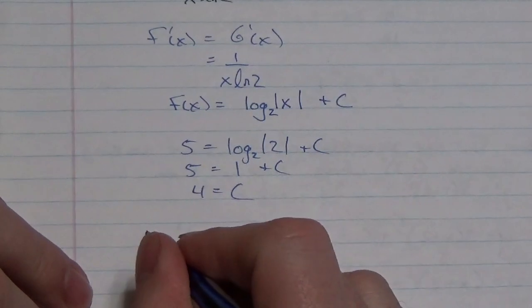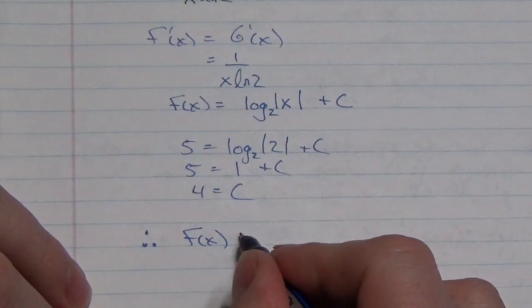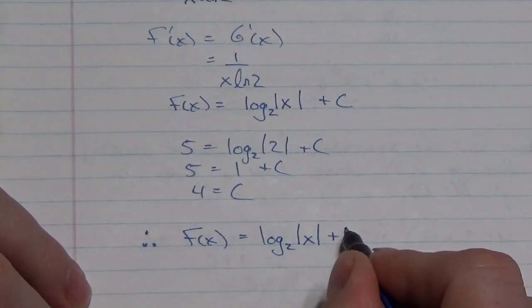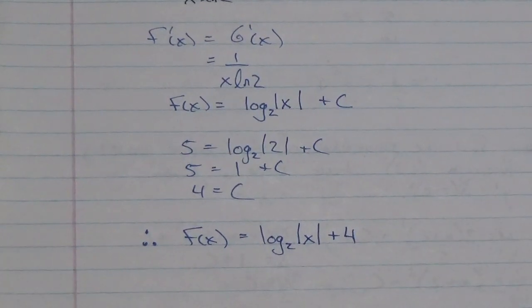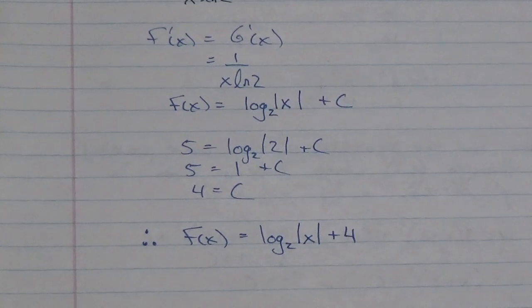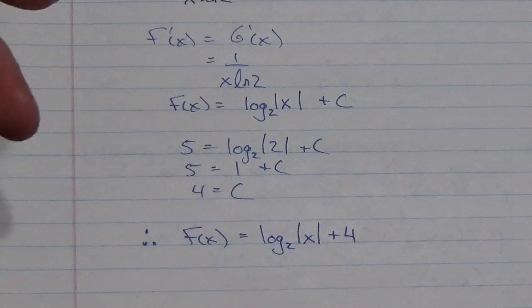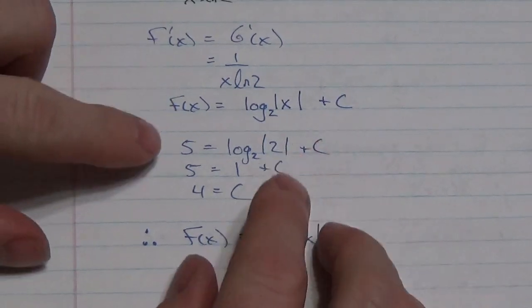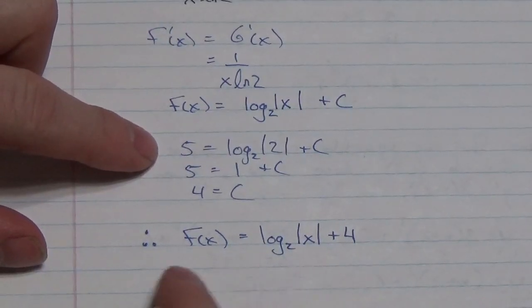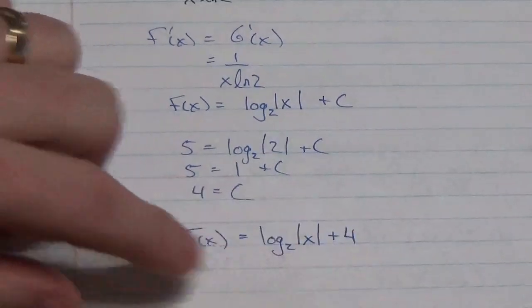Finally, I know, putting this all together, that f(x) in this particular problem, the function we're looking for, is the log base 2 of the absolute value of x, plus the number 4. So that's basically how it works with a boundary condition. You simply take your antiderivative, and then when you've got that arbitrary constant there, you plug in the point that you're given, and use that to solve for that arbitrary constant. So now you haven't got this family of functions anymore. You've got a specific one.